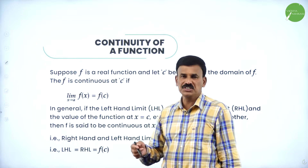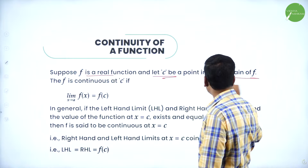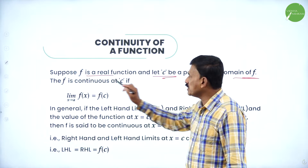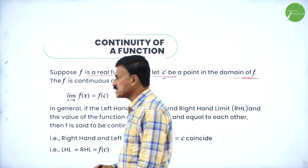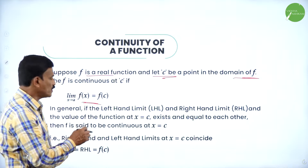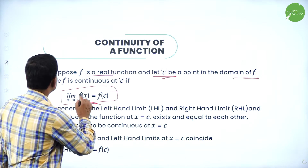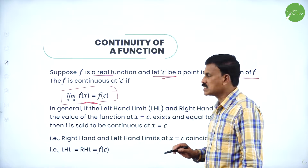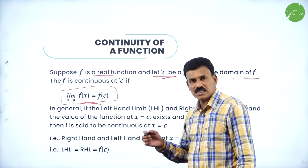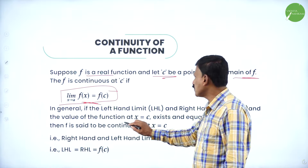Let us come to the definition of a continuous function. Suppose f is a real valued function and c is a point in the domain of f. Then f is continuous at c if the limit of f(x) exists and the limit of f(x) as x approaches c is equal to f(c).